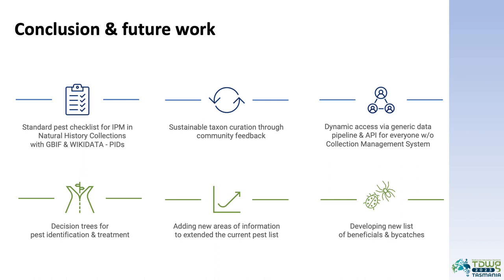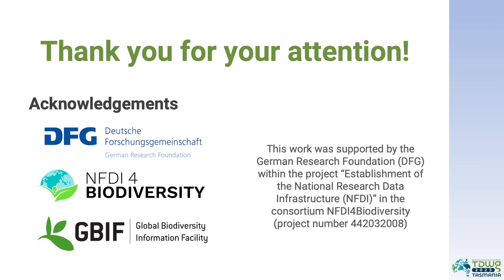In conclusion, we presented a data management model aimed at creating a readily accessible, free, and continuously updated standard pest checklist for recording in natural history collections, including persistent identifiers. The list can be improved through user feedback and is available for use by anyone, regardless of whether they have an existing collection management system. We will continue expanding this work, for example, by incorporating decision trees for pest identification and treatment, improving the current pest list, and developing a list of beneficial and vexatious organisms found in collection traps. Thank you very much for your attention and I'm happy to answer your questions.